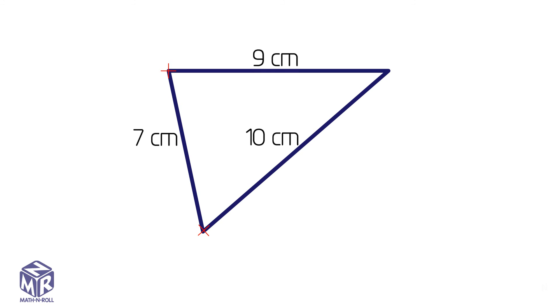Now we add the lengths. 10 plus 9 plus 7 equals 26. So the perimeter is 26 centimeters.